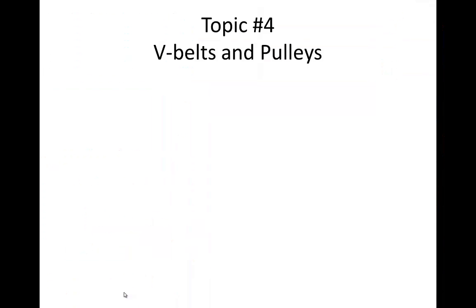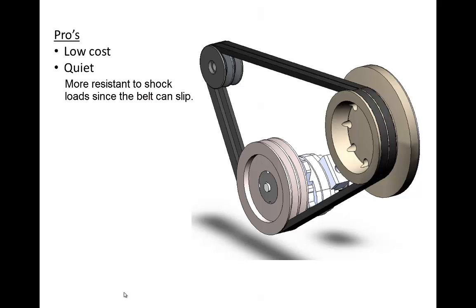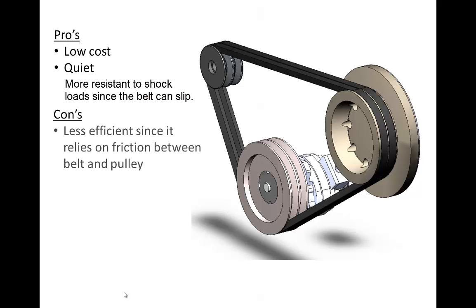Now let's move to topic number 4 on V-belts and pulleys. We won't go into the same depth with these components, but I at least want to introduce them. V-belts seat in a V-groove on a pulley and rely on friction between the belt and pulley to transmit power — if the belt is too loose, you won't get the friction you need and the belt will slip. Benefits include lower relative cost and quieter operation compared to chain drives. However, they are much less efficient since they rely on friction and lose energy as the belt pulls out of the groove as it moves around the loop.